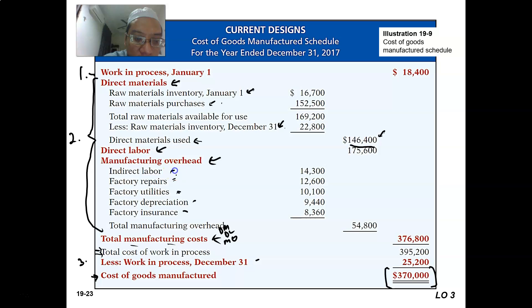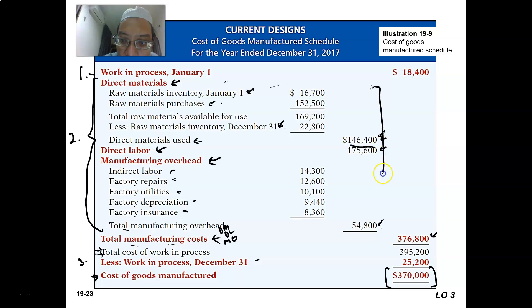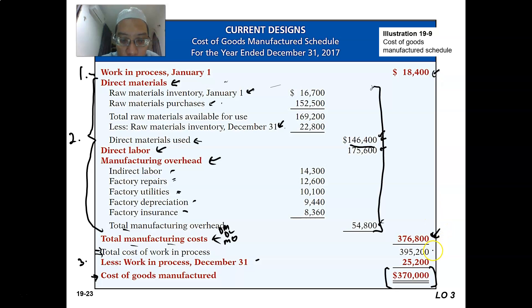You total all examples of manufacturing overhead to get the total manufacturing overhead, which is $54,800. Then you add the three together: direct materials used, plus direct labor, plus total manufacturing overhead, giving the total manufacturing cost. Then, adding the beginning work in process to the total manufacturing cost gives the total cost of work in process, and minus the ending work in process gives the total cost of goods manufactured.